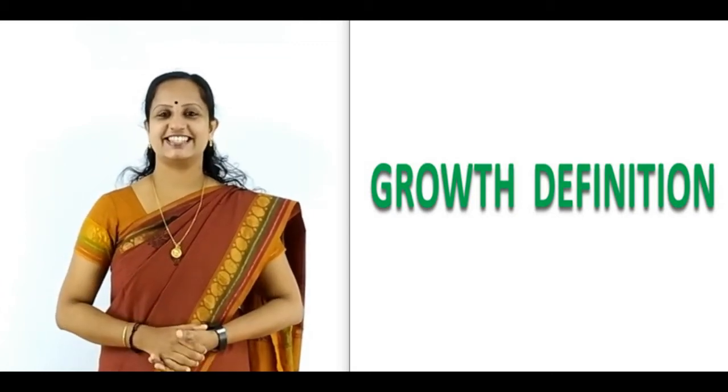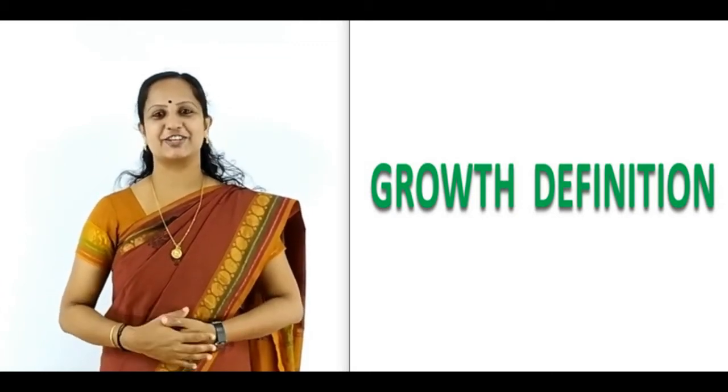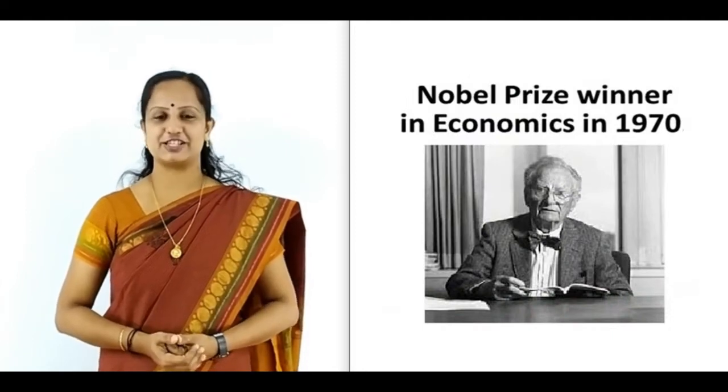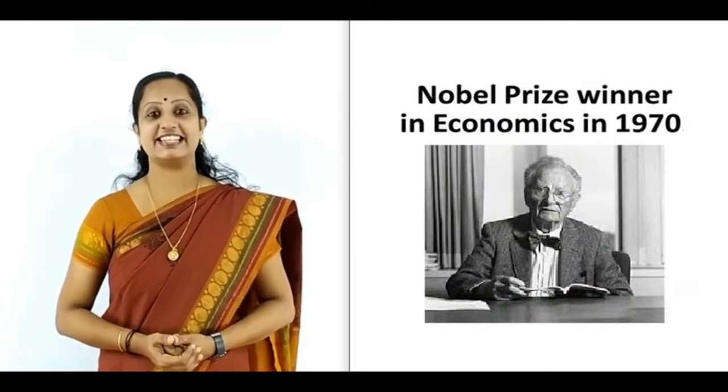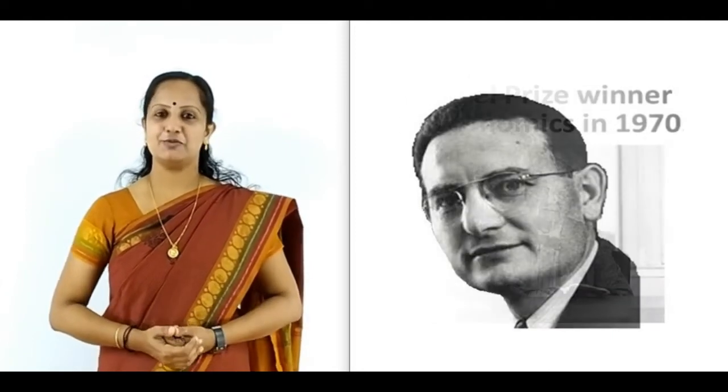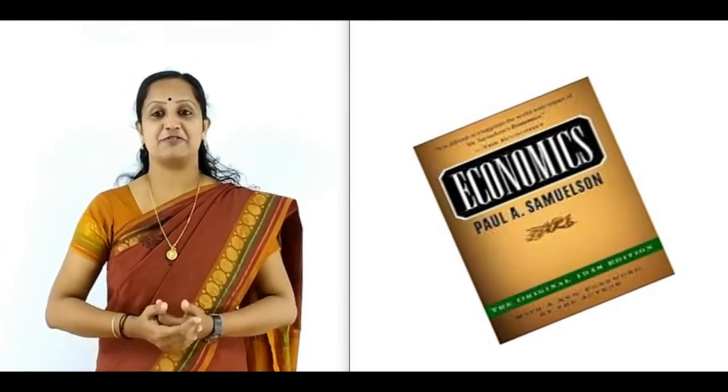Now let us study Samuelson's growth definition. On the screen you can see the picture of Professor P.A. Samuelson, the American Nobel Prize winner in economics in 1970. Samuelson tried to remove the defect of exclusion of economic growth in Robbins' definition. In his book 'Economics,' he gave a growth-oriented definition.